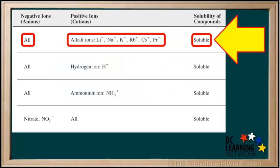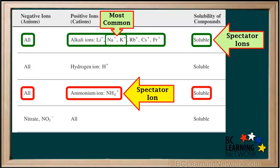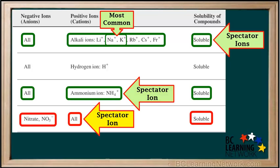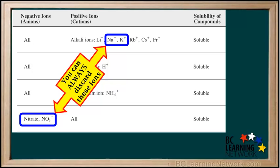Looking at the solubility table, the alkali metal ions, or group I ions, form soluble compounds with all negative ions, so these ions are always spectator ions. The most common are sodium and potassium ions. Another positive ion that is always a spectator is the ammonium ion, NH4+. A negative ion that is soluble with everything and always a spectator is nitrate, NO3-. Compounds containing H+ ions are acids and are also soluble, though we don't routinely exclude H+ ions because they affect solubility of some compounds. You can discard all spectator ions in solubility problems, including all alkali metal ions and nitrate ions.